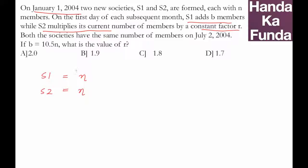This means the number of members in group S1 will be in an AP (arithmetic progression), whereas the number of members in group S2 will be in a GP (geometric progression). Both societies have the same number of members on July 2nd.